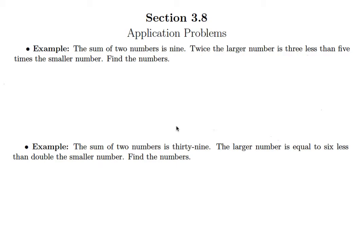In this lesson we're going to do a couple examples where we're actually asked to find two pieces of information. So the first example says the sum of two numbers is nine. Twice the larger number is three less than five times the smaller number. Find the numbers.